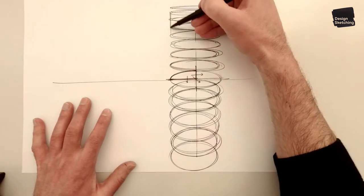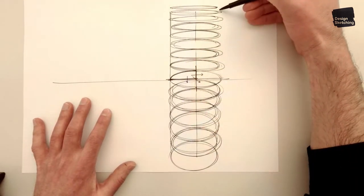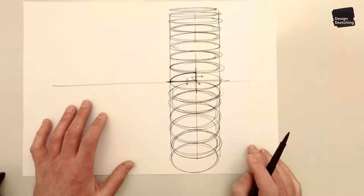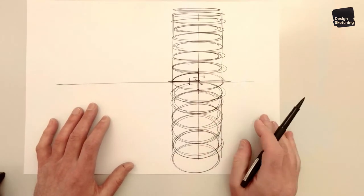So try and make an effort to keep them the same width all the way from top to bottom. And this already gives you an impression of a cylinder.